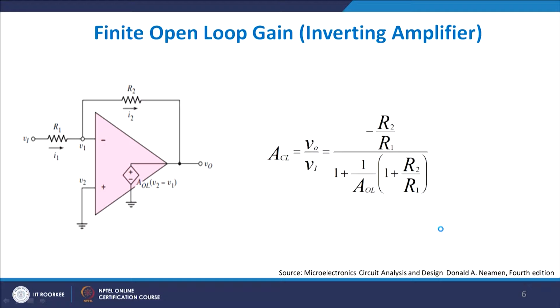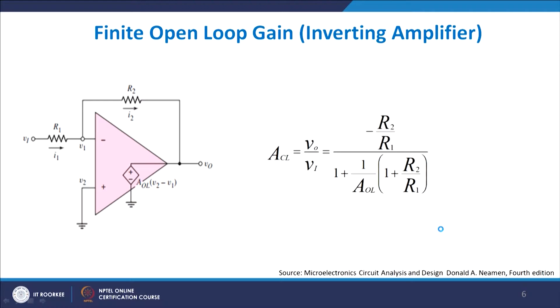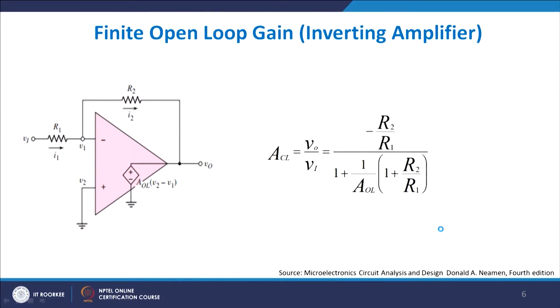For an inverting amplifier the output is 180 degrees phase-shifted, giving a closed loop gain ACL equals minus R2/R1. But if the open loop gain AOL is not infinite and is restricted to a finite value, the closed loop gain is related to AOL by a correction factor. This is the difference between the ideal closed loop gain and the actual closed loop gain when the open loop gain is finite.